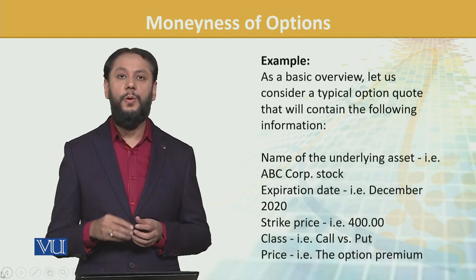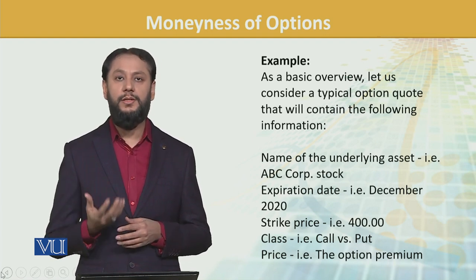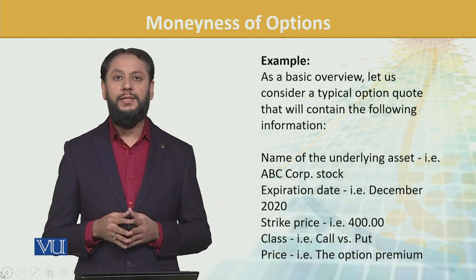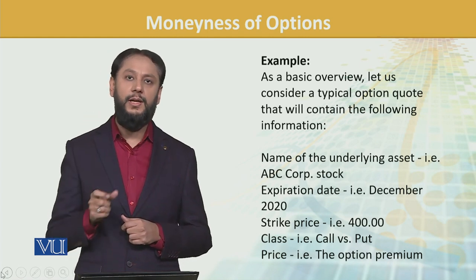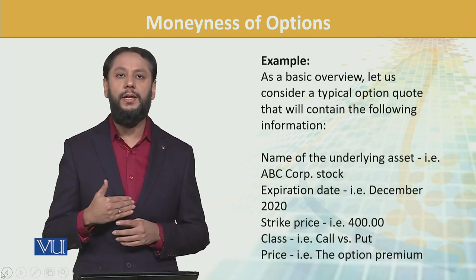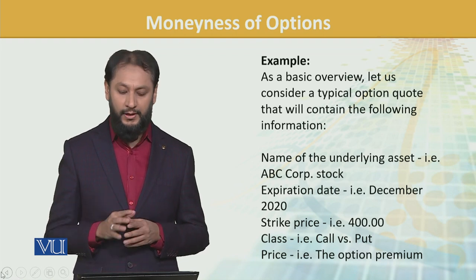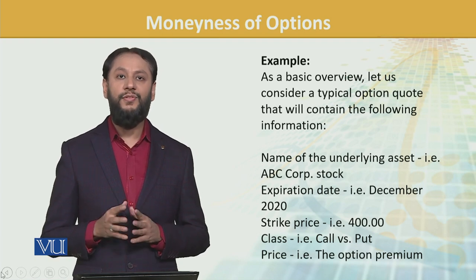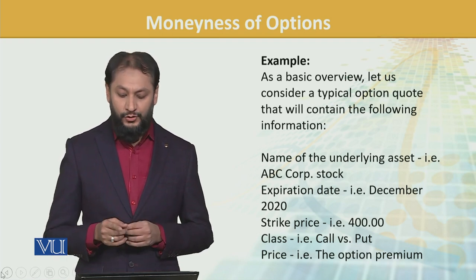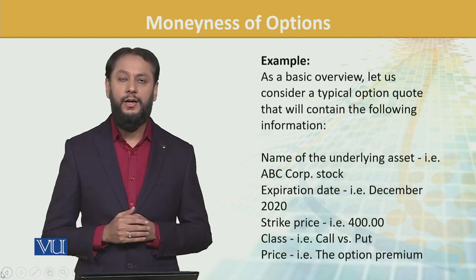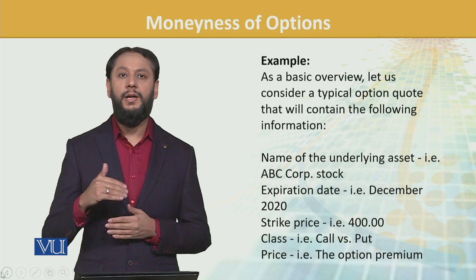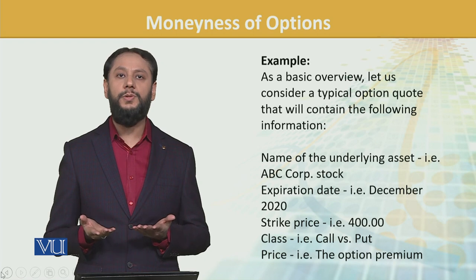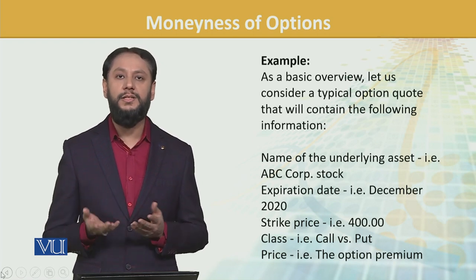For example: the option premium — that is referred to as the price. Now in this situation, you should have a table with an extra column showing different options and what the possibility will be. For example, a call option where the price is 350 and the market strike price is 400 — 350 is our market price and we can buy at 400. This option is out of the money; exercise: no.